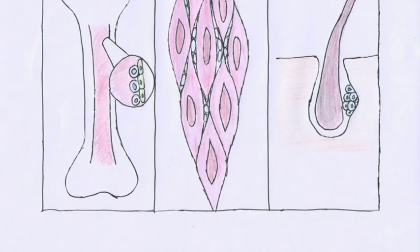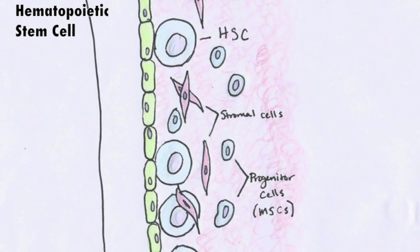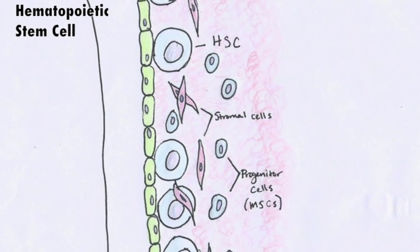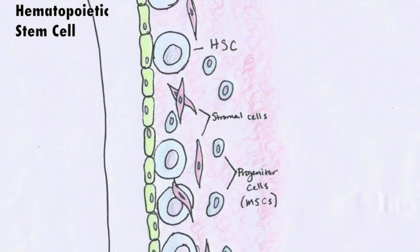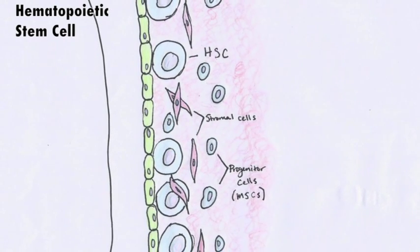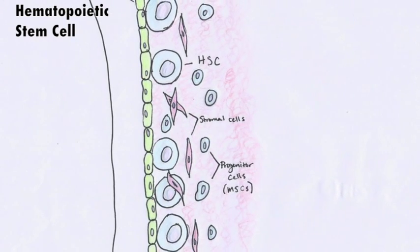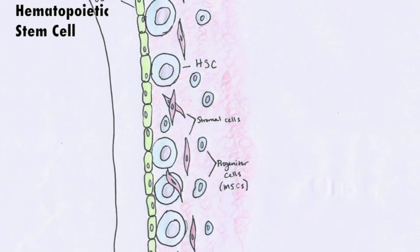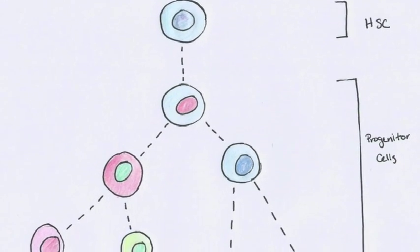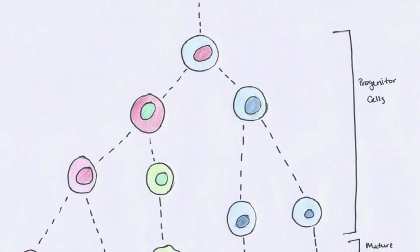Take the hematopoietic stem cell, HSC, for example. This cell has the potential to give rise to all of the many different cells of the blood. Its niche is located in the bone marrow and is comprised of many different cells, including osteoblasts, or bone cells. Only when contact is lost between the hematopoietic stem cells and osteoblasts does the HSC begin its process of differentiation, which can lead to the production of cells from red and white blood cells to platelets.